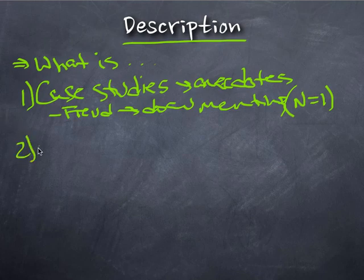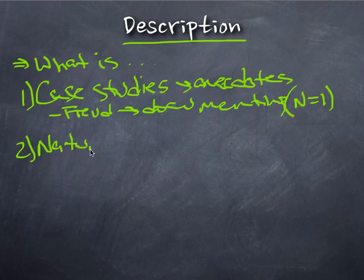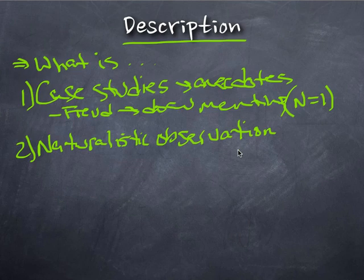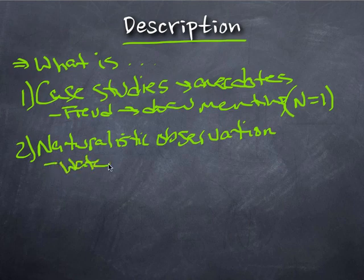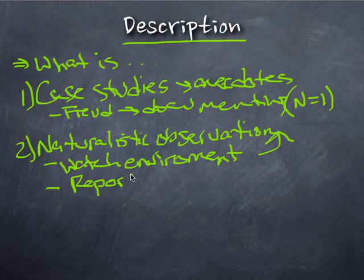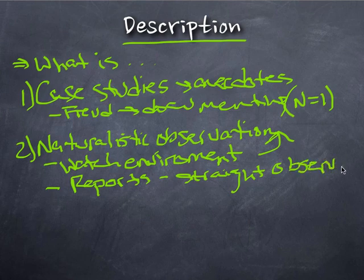The second thing is naturalistic observations. As the name implies, the observer becomes as invisible as possible, and we watch in the actual environment itself and try to make all the observations that we can, given the data that is before us, rather than making any changes in the environment. It's very much like case study, except that this is not built on reports by people, which is what case studies are often built on, but on straight observations that people make. That is naturalistic observations.